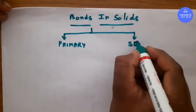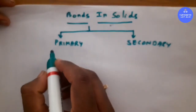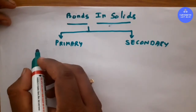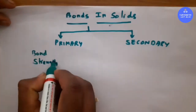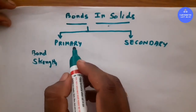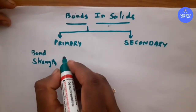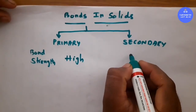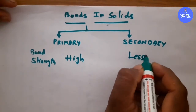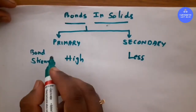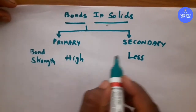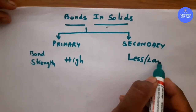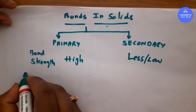The first type is a primary bond and the second one is a secondary bond. The basic difference between them is bond strength. Bond strength is high in primary bonds, whereas in secondary bonds the strength is weak or less.